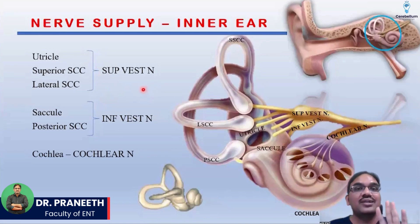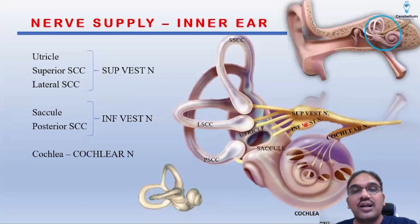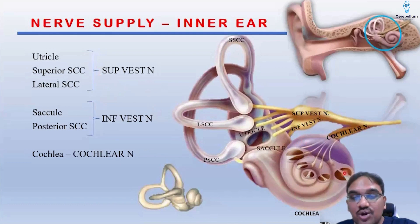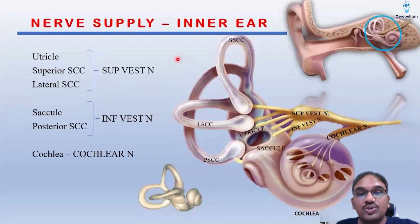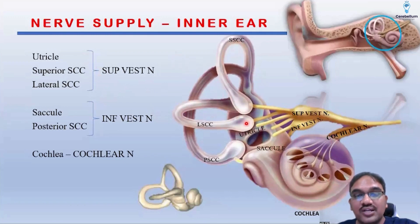You don't need to memorize this by rote. Just try to remember the anatomical orientation of the inner ear structures. If you remember that, it becomes easy. See — the cochlea is lying antero-inferiorly. As you move posterosuperiorly, the utricle and saccule are present. The superior semicircular canal is most superiorly present, and you can see the lateral semicircular canal.